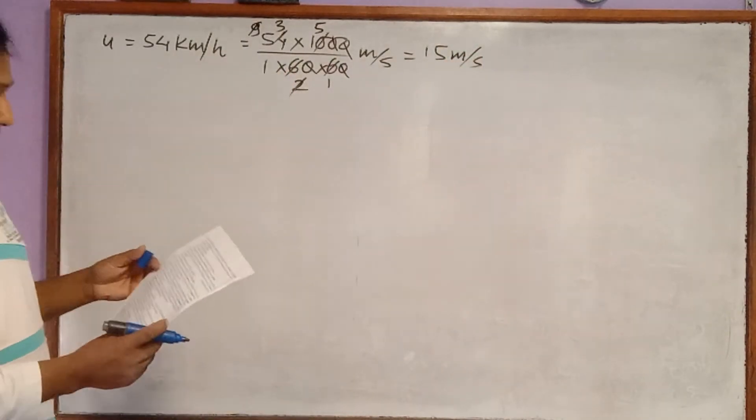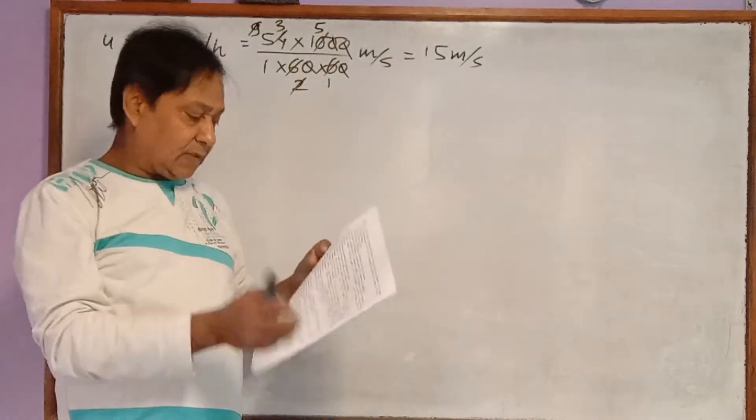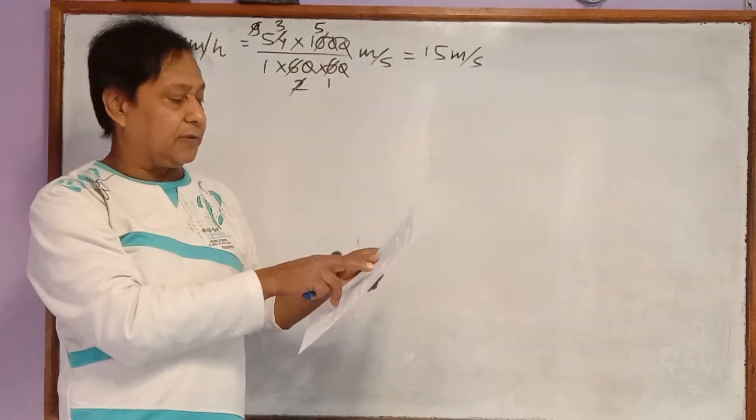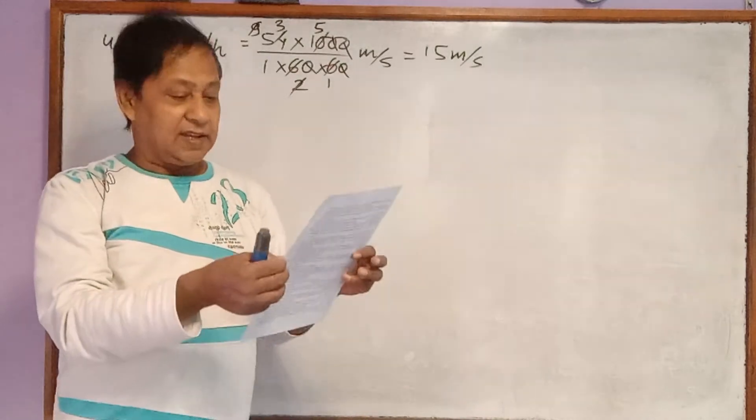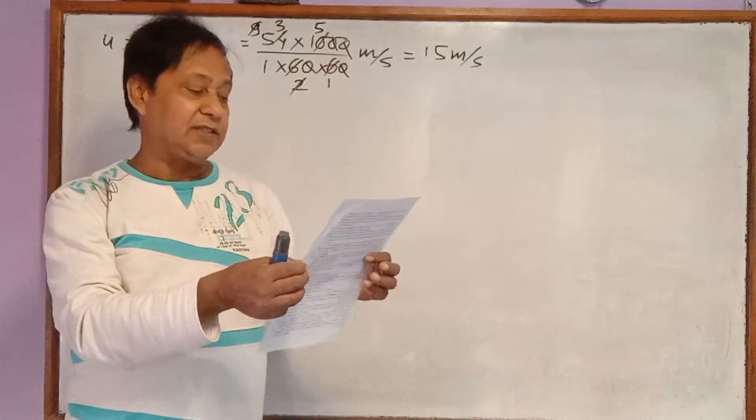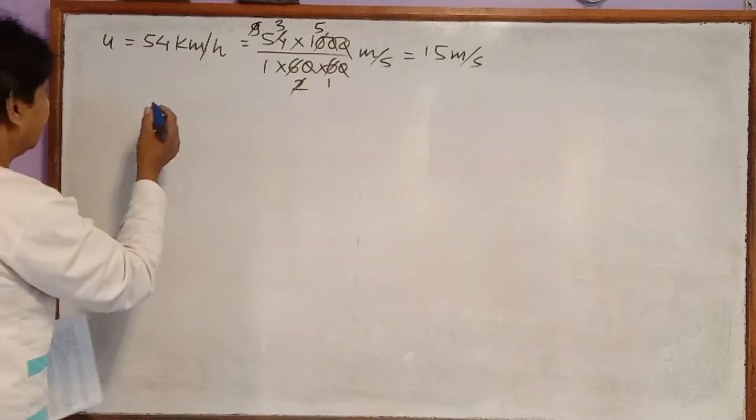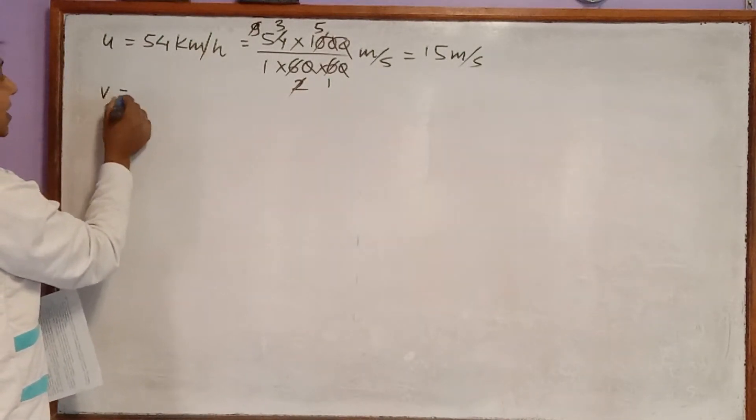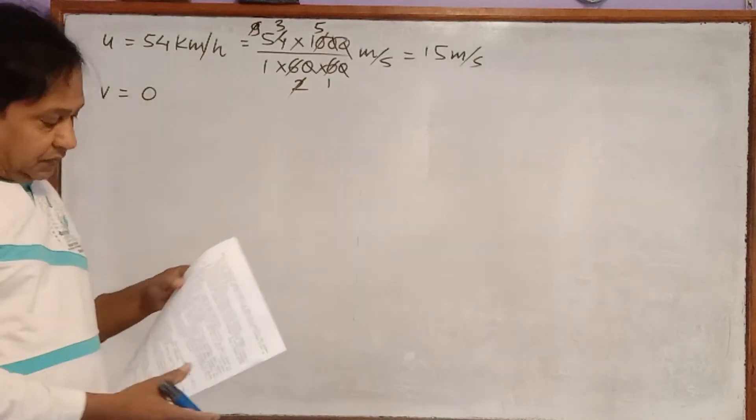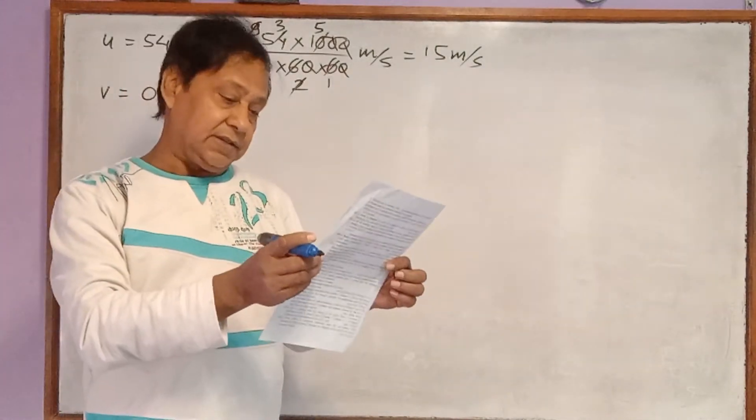The car is moving with the velocity of 54 kilometer per hour. Suddenly the driver applies brake. When driver applies brake, finally it comes to rest. That's why we can say final velocity is 0.